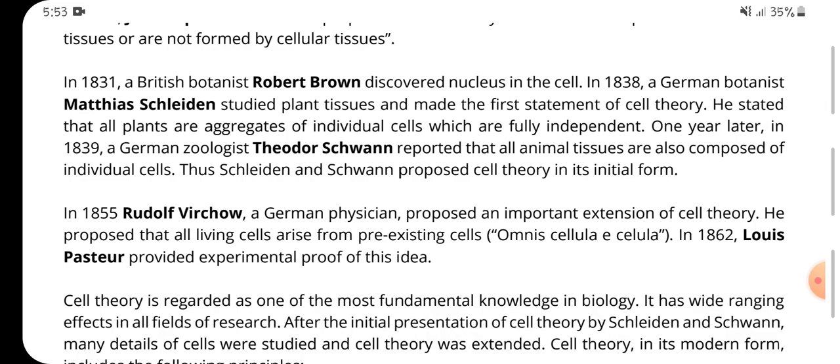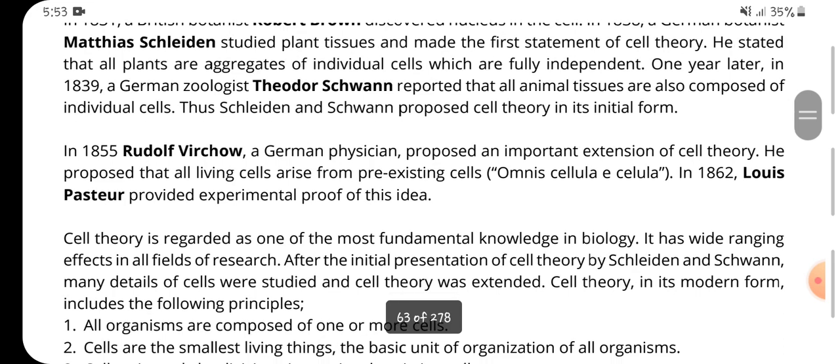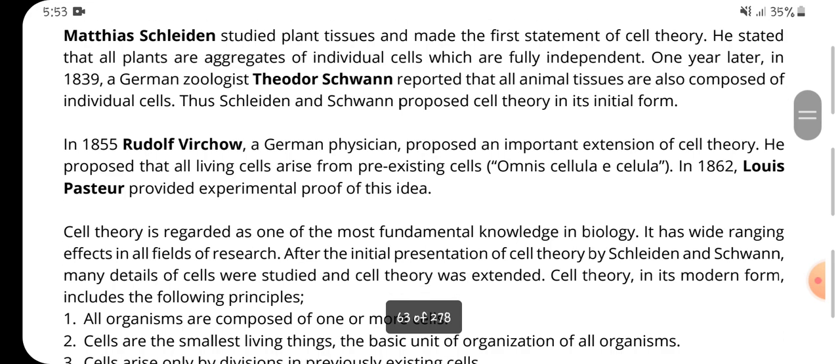One year later, in 1839, German zoologist Theodor Schwann reported that all animal tissues are also composed of individual cells. Together, Schleiden and Schwann proposed cell theory in its initial form.